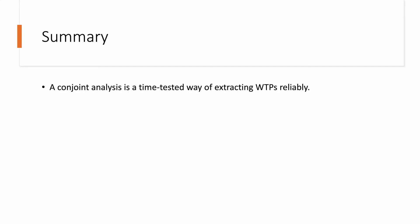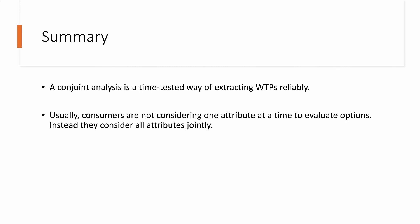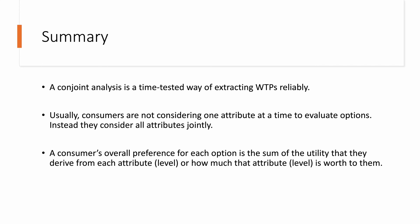Let's recap. Conjoint analysis is a time-tested way of extracting willingness to pays reliably. It has been used hundreds, if not thousands, of times, and there are businesses using conjoint analysis to conduct market research for large companies like Apple. For this method, the basic premise is consumers are not considering one attribute at a time. Instead, we evaluate the combination of all attributes jointly. And the consumer's overall preference is the sum of the utility that they derive from each one of these attributes and how much that attribute level is worth to them.